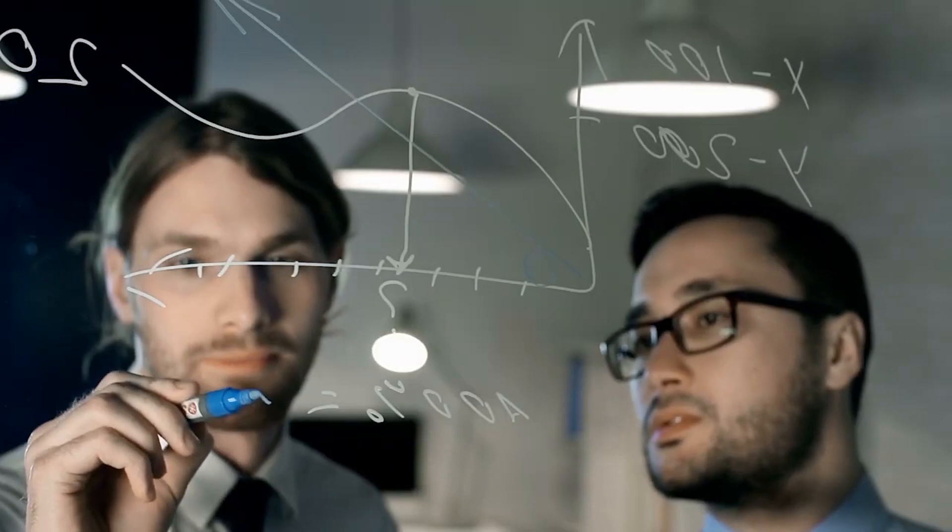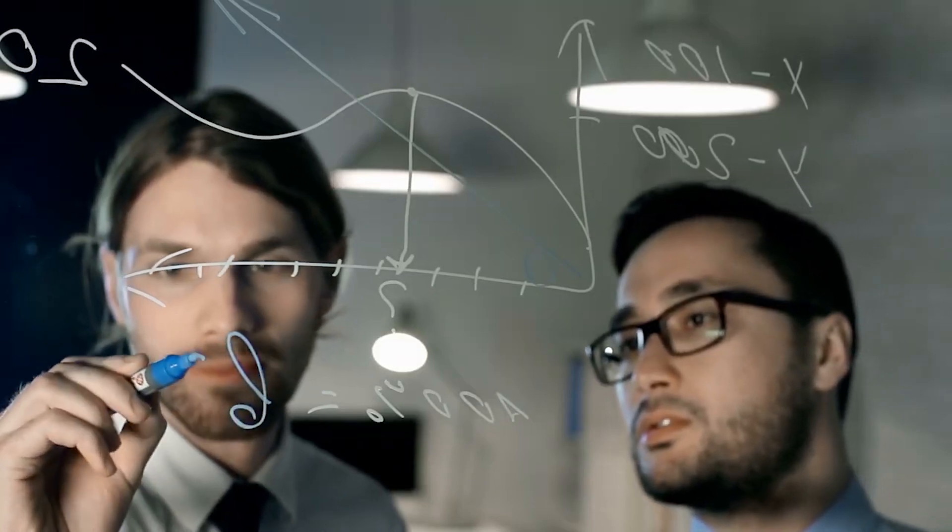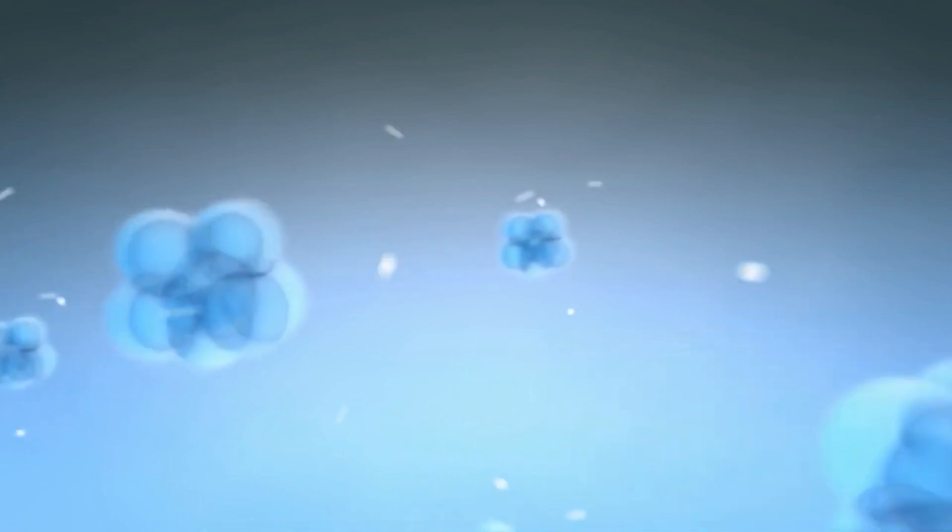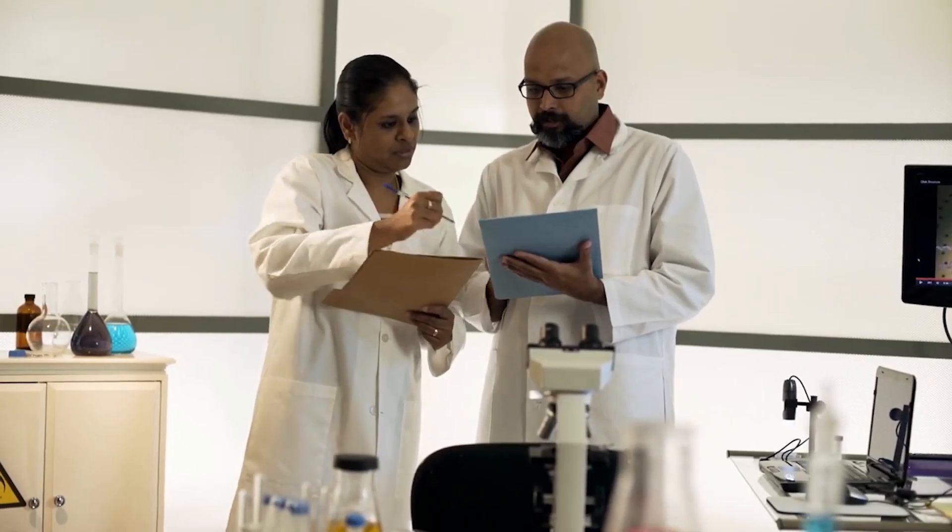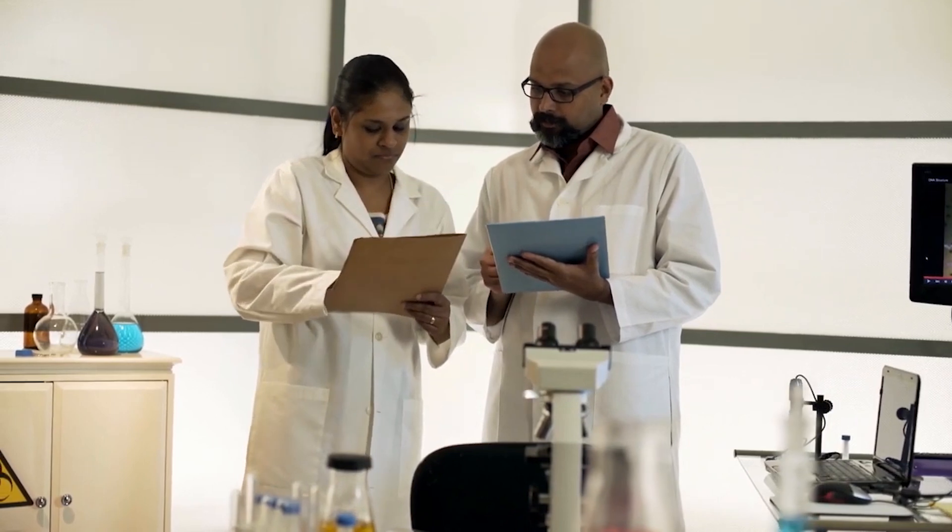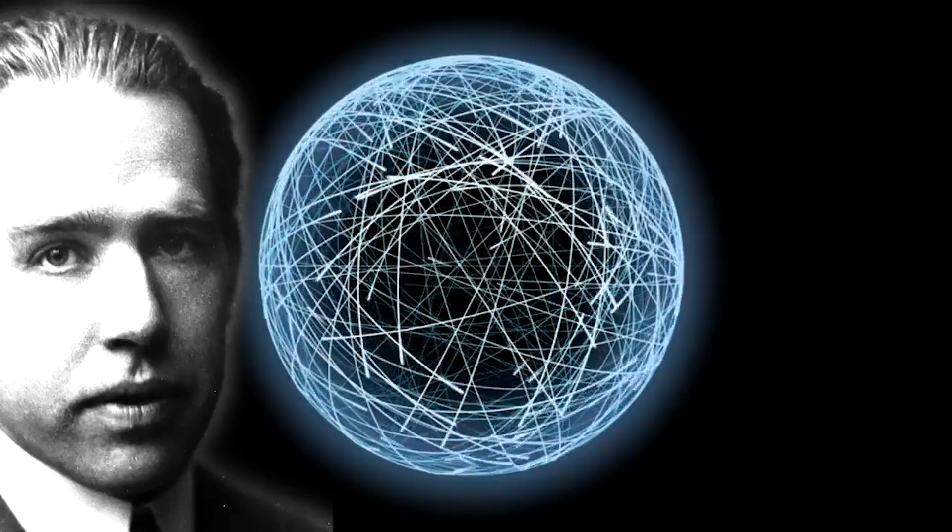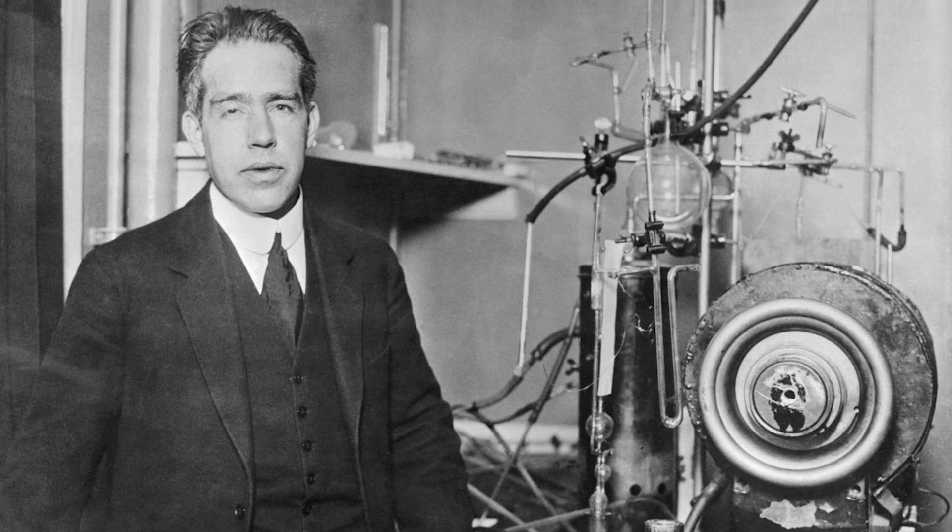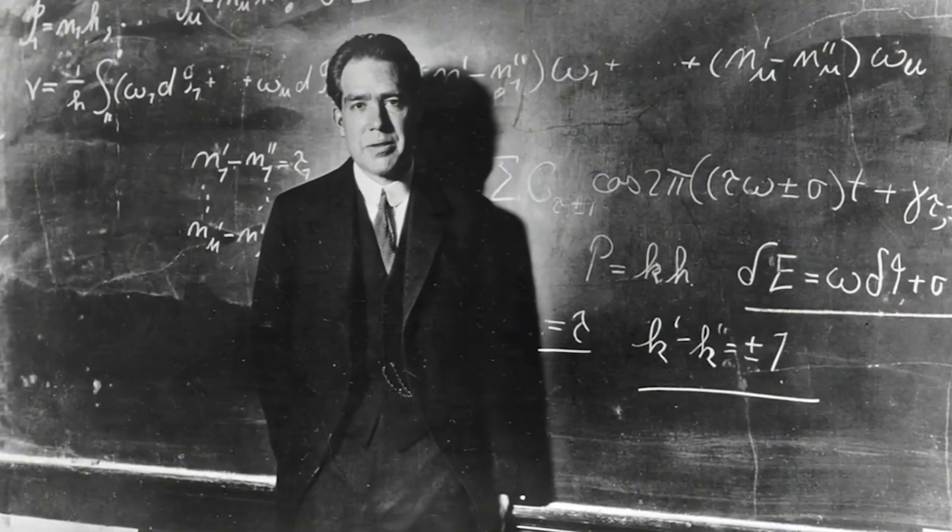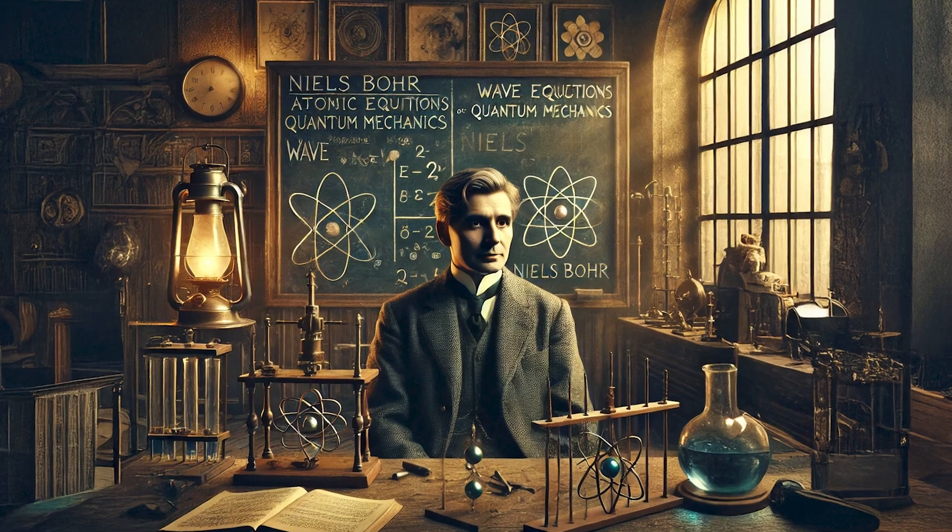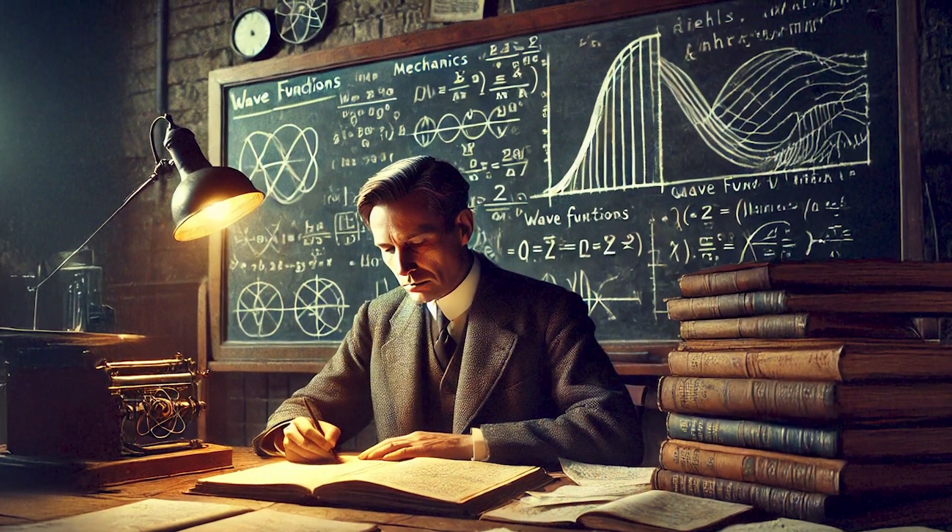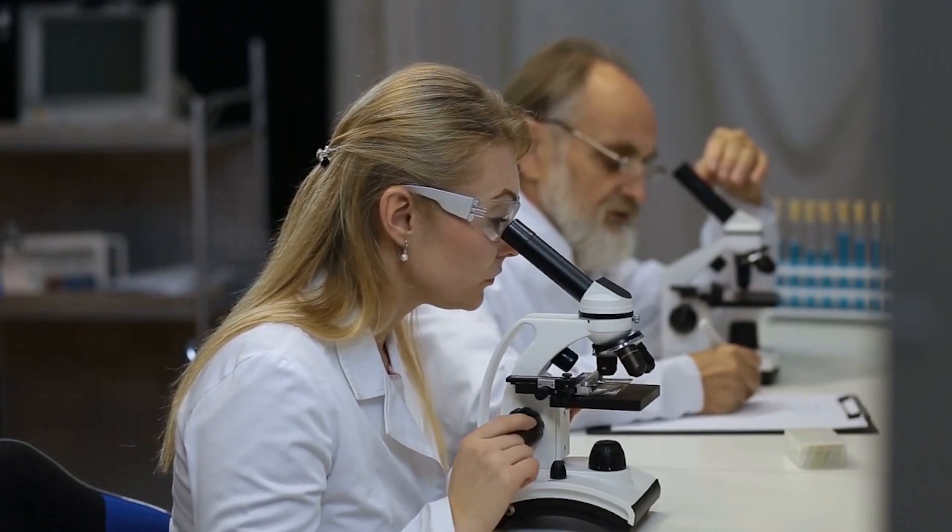Schrödinger's thought experiment sparked intense debate in the scientific community. Some physicists saw it as a clever way to highlight the limitations of quantum mechanics, while others believed it actually reinforced the core principles of the Copenhagen interpretation. One of the key supporters of the Copenhagen interpretation, Niels Bohr, didn't see Schrödinger's cat as a flaw in quantum mechanics, but rather as a demonstration of its principles. He believed the paradox perfectly illustrated the idea that quantum states remain in superposition until they are measured.